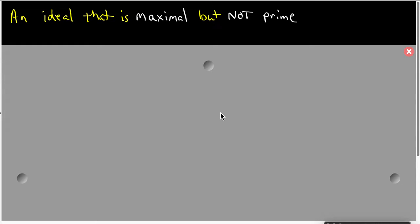In this video, we're going to look for an ideal that is a maximal ideal but not a prime ideal. The reason this is important is that sometimes students have real problems understanding the differences between these two kinds of ideals.